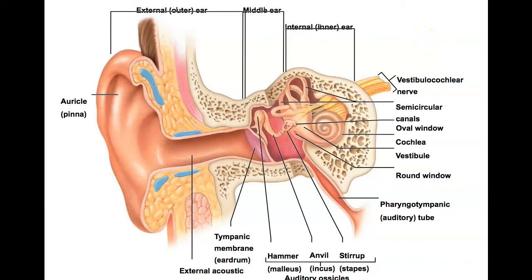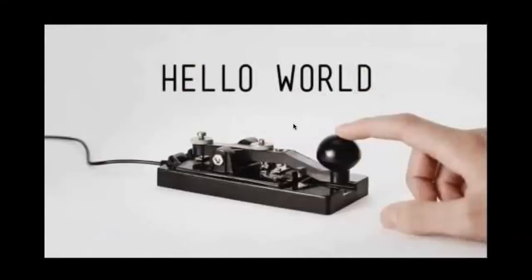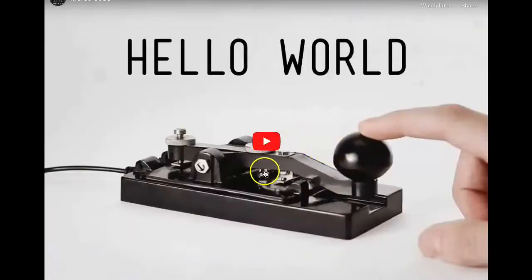Previously in anatomy we discussed the anatomy of the ear — the external ear, all its parts, the middle ear and the different bones inside. We talked about how sound works, how it travels through our ears. Today we're going to focus on the physiology: how do we hear, and what is sound?